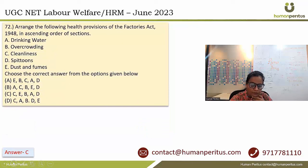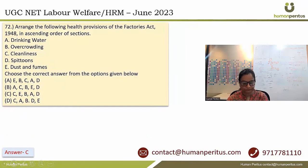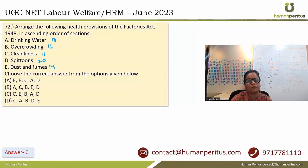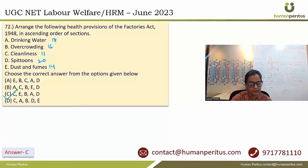In question 72, arrange the health provisions of the Factories Act in ascending order of sections. Cleanliness is section 11, Dust and fumes is section 14, Overcrowding is section 16, Drinking water is section 18, Spittoon is section 20. If we arrange them in ascending order, option C is the correct answer: C, E, B, A, D.